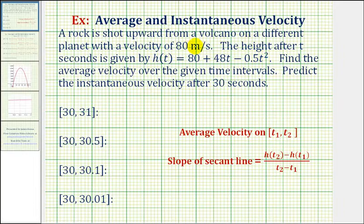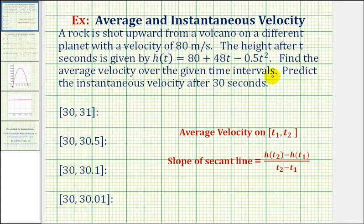A rock is shot upward from a volcano on a different planet with a velocity of 80 meters per second. The height after t seconds is given by the function h of t equals 80 plus 48t minus 0.5t squared. We want to find the average velocity over the given time intervals and then predict the instantaneous velocity after 30 seconds.